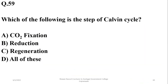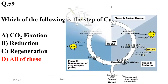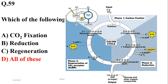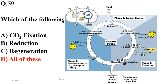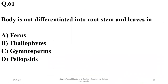Number 59. Which of the following is a step of the Calvin cycle? The Calvin cycle is comprised of three stages: carbon dioxide fixation, then the reduction phase, and the third stage is regeneration. So delta is the right option. Number 60. Which of the following hormones is used in the malting process? It is gibberellin or gibberellic acid. Charlie, number 61.